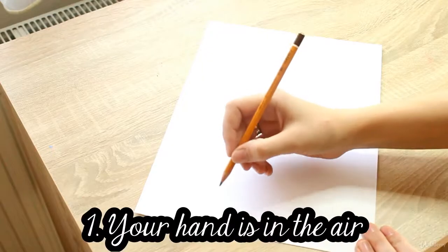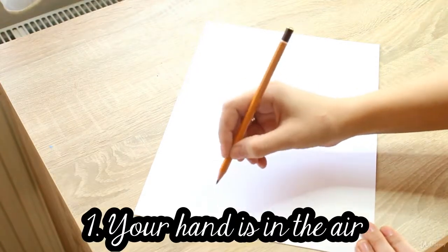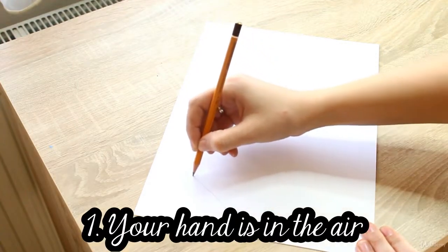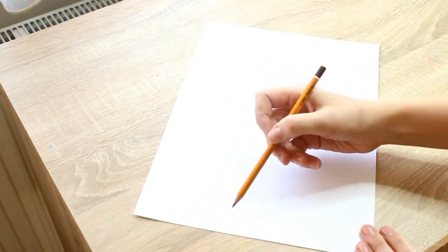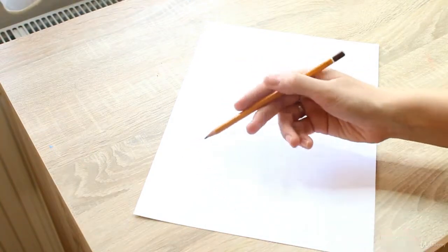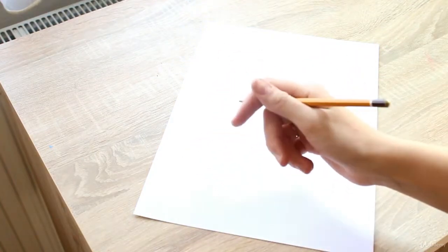For example, when you were drawing, your hand was in the air. If your hand is in the air, your line is not consistent. There are two things you can do about it.